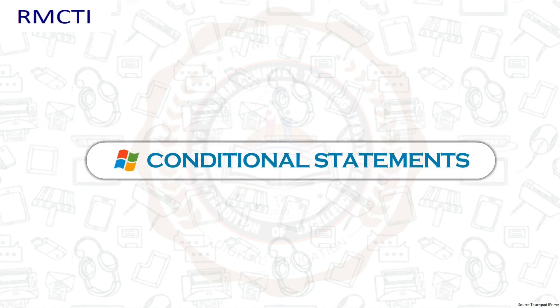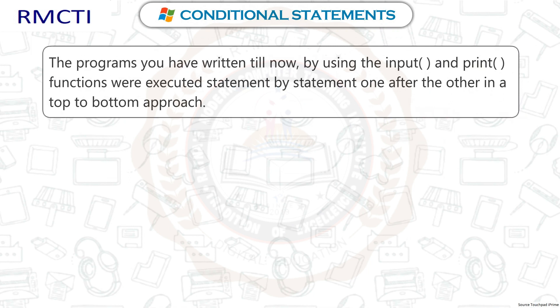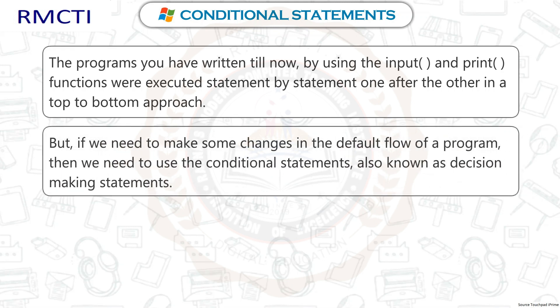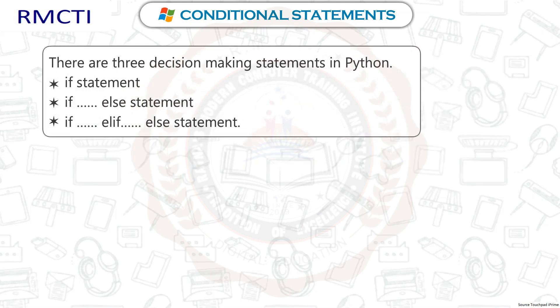Conditional Statements: The programs written so far were executed statement by statement in a top-to-bottom approach. But if we need to change the default flow of a program, we use conditional statements, also known as decision-making statements. There are three decision-making statements in Python: the if statement, the if-else statement, and the if-elif-else statement.